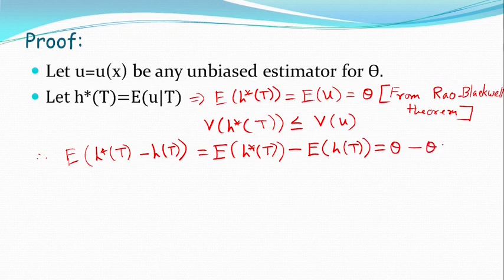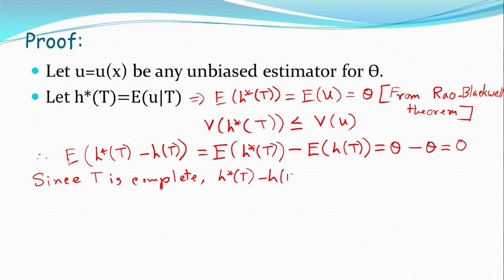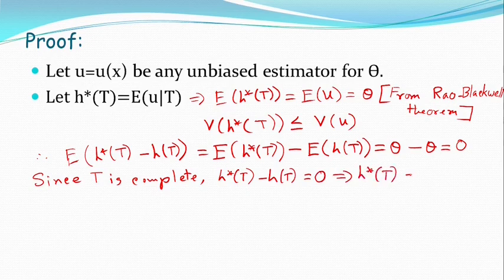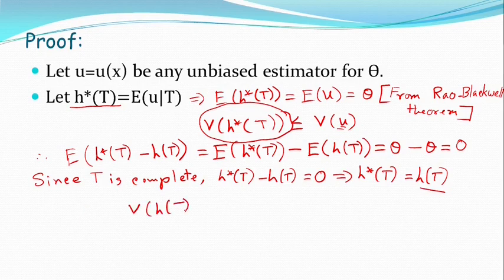So, theta minus theta — this is equal to 0. Now, t is complete sufficient statistics. Aamra tahali likte paari h* of t minus h of t must be equal to 0. That means h* of t is equal to h of t. Now h* of t ekhan aamra arbitrary dhore chelam, ebang aamra payechi variance of h* of t is less than or equal to any other unbiased estimator. So h of t jodhi h* of t-r jae gae replace kori, tahali aamra pachhi variance of h of t is less than or equal to variance of any other unbiased estimator.